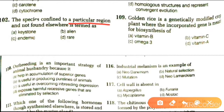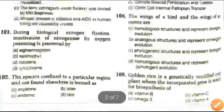Next question: species confined to a particular region and not found elsewhere is termed as what? Options are keystone, alien, endemic, and rare. The answer is endemic. Species that are found only in one particular region and nowhere else are called endemic species.